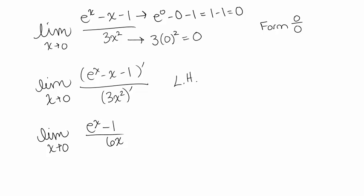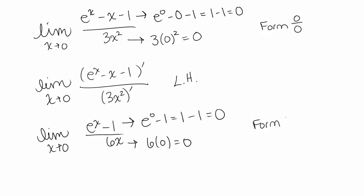Now let's check the form again. The top of this fraction as x goes to 0 goes to e to the 0 minus 1, which is 1 minus 1, which is 0. The bottom goes to 6 times 0, which is also 0. So again we have a form of 0 over 0 and we can apply L'Hôpital's rule.